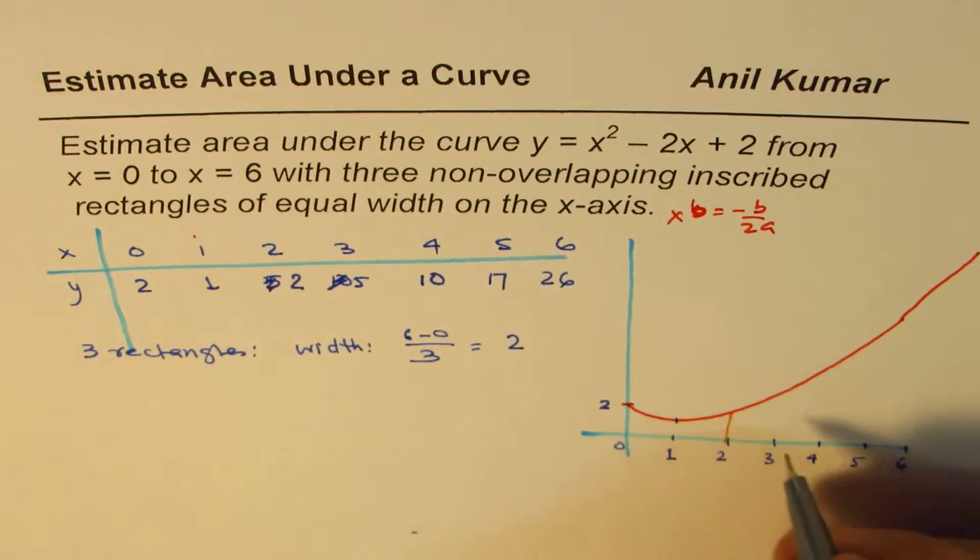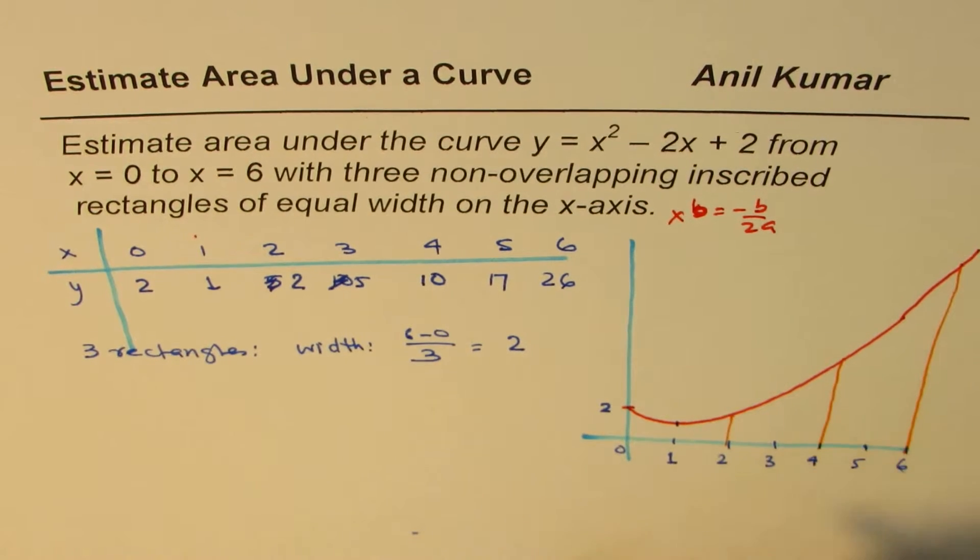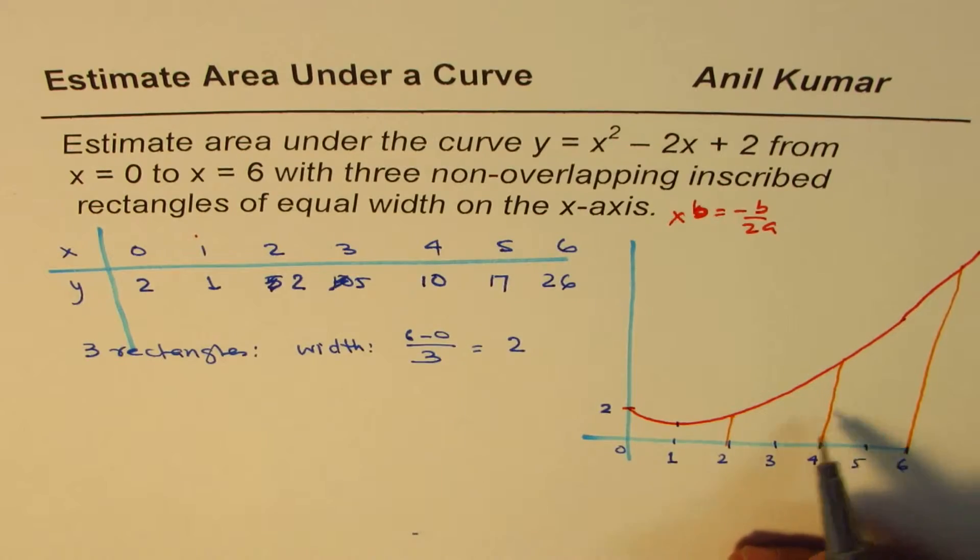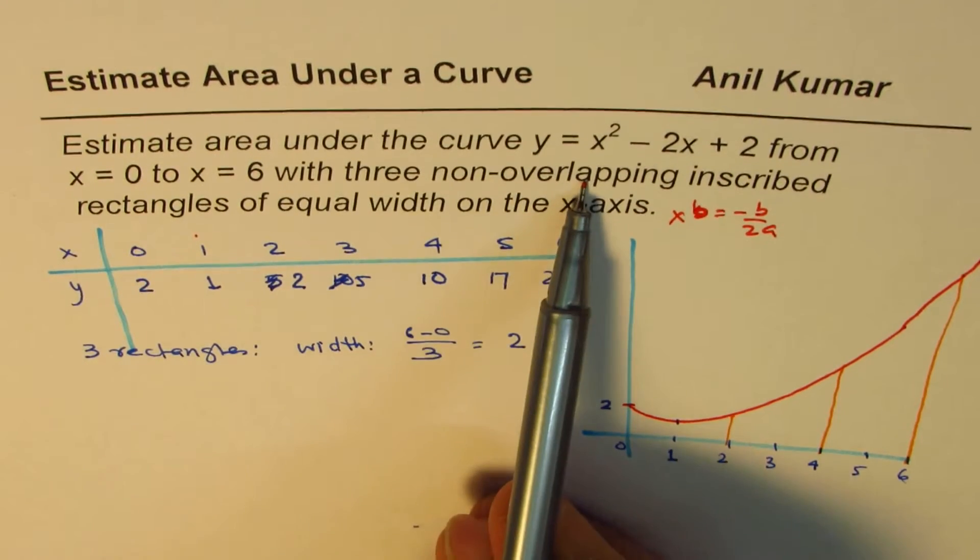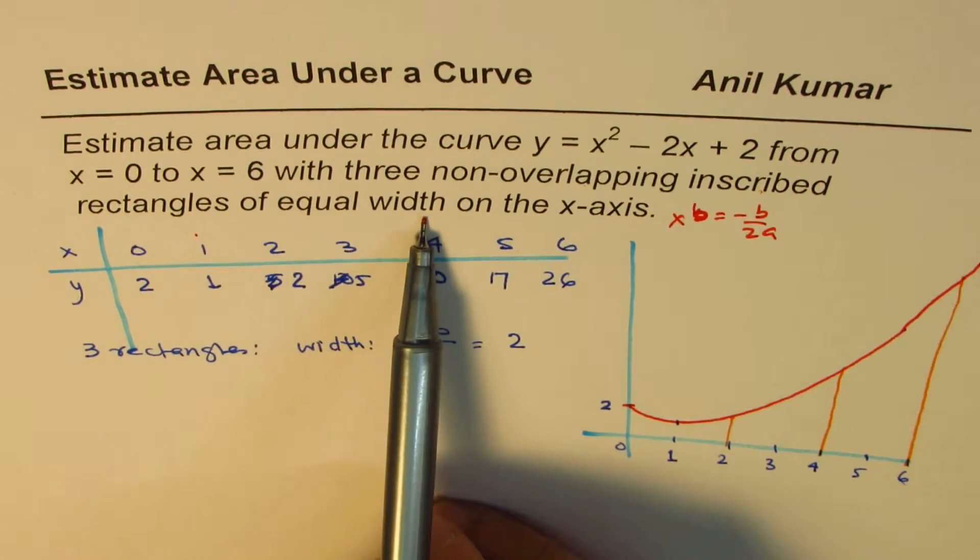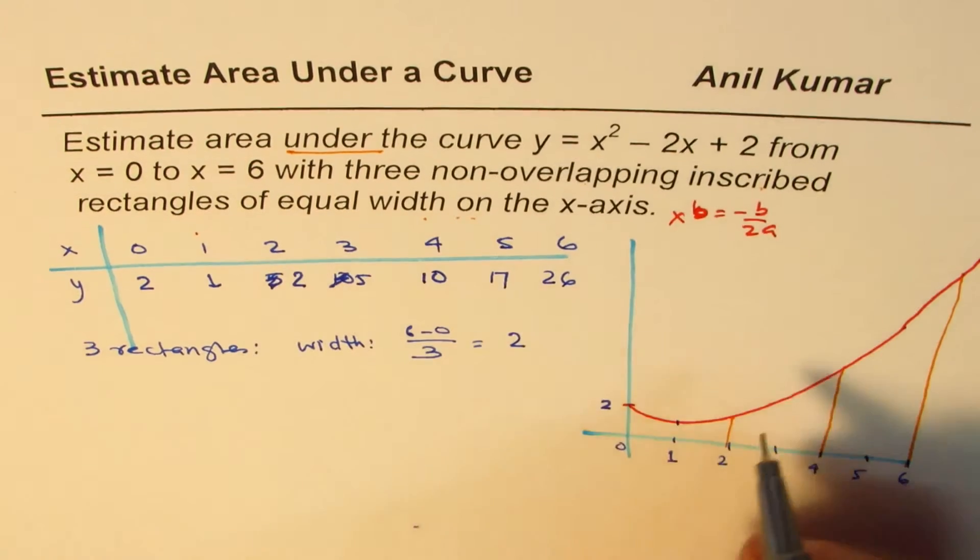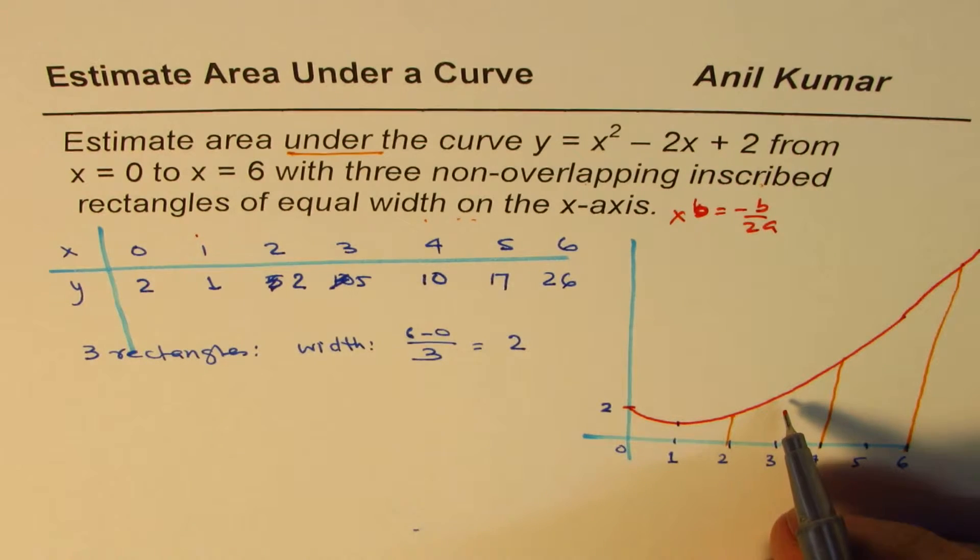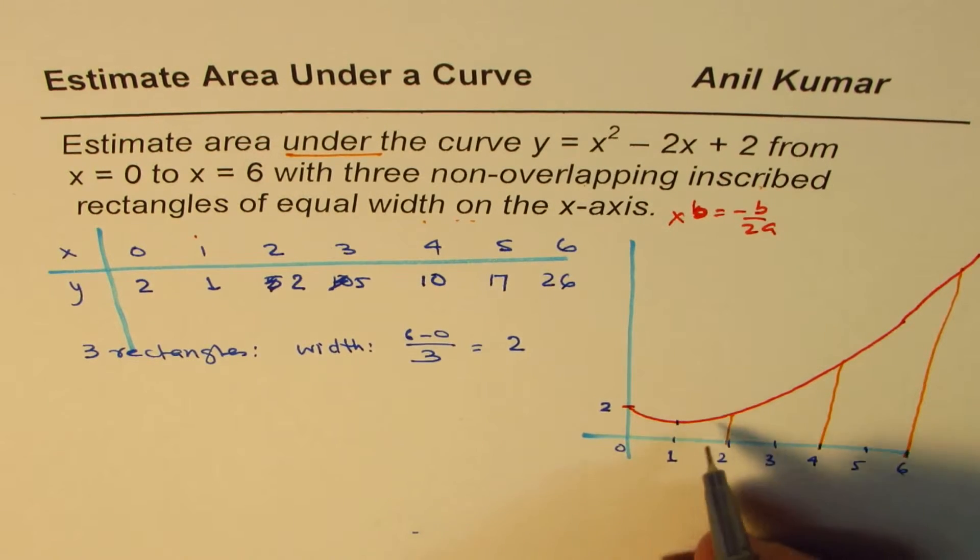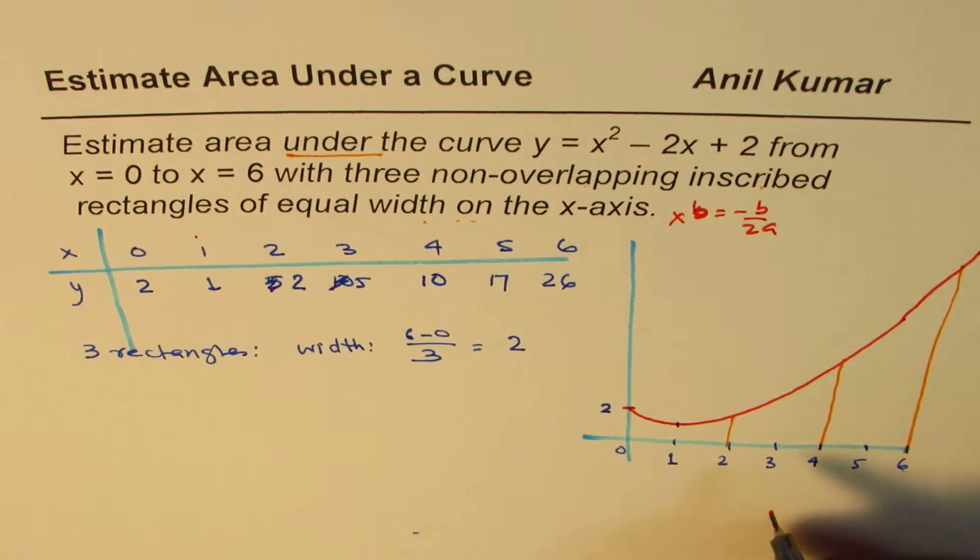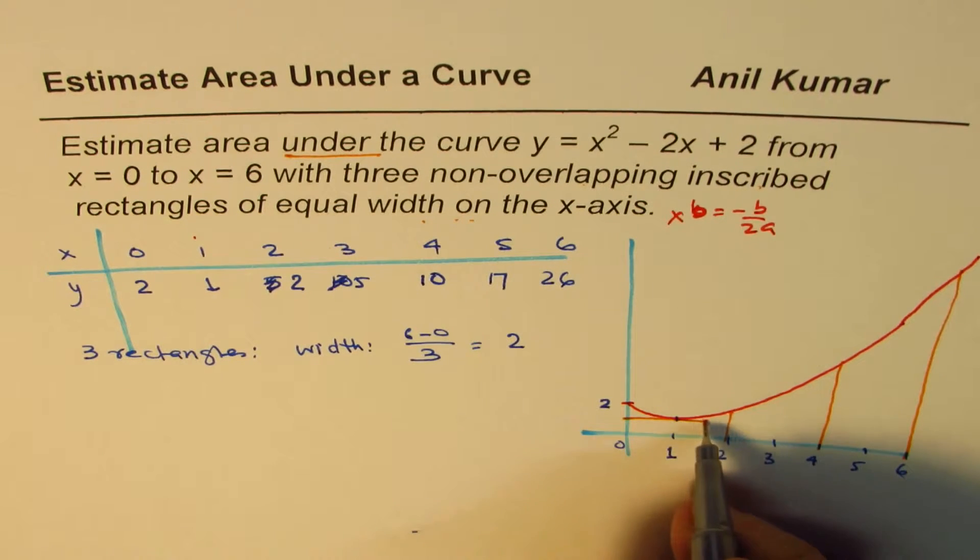So the rectangles will be of width 2. So let me just make rectangles from here. So we have rectangles like this, and then the last one here. So these are the 3 rectangles. Since they are inscribed, it says estimate area under this curve from 0 to 6 with 3 non-overlapping inscribed rectangles of equal width.